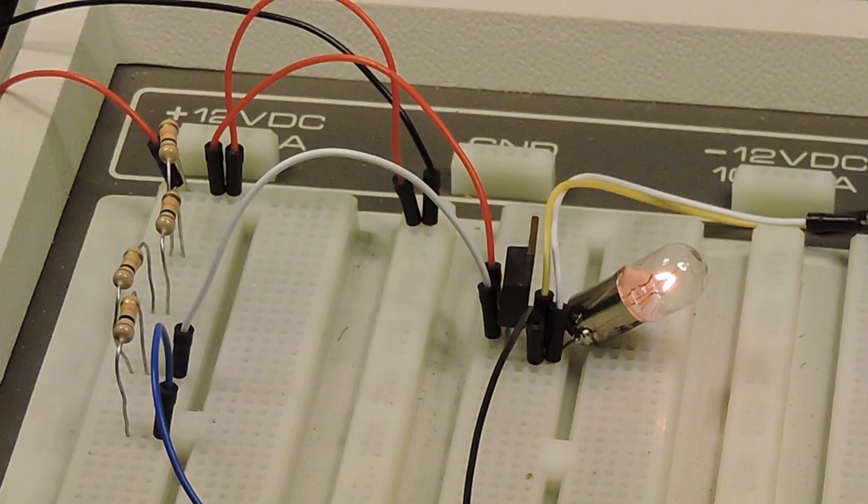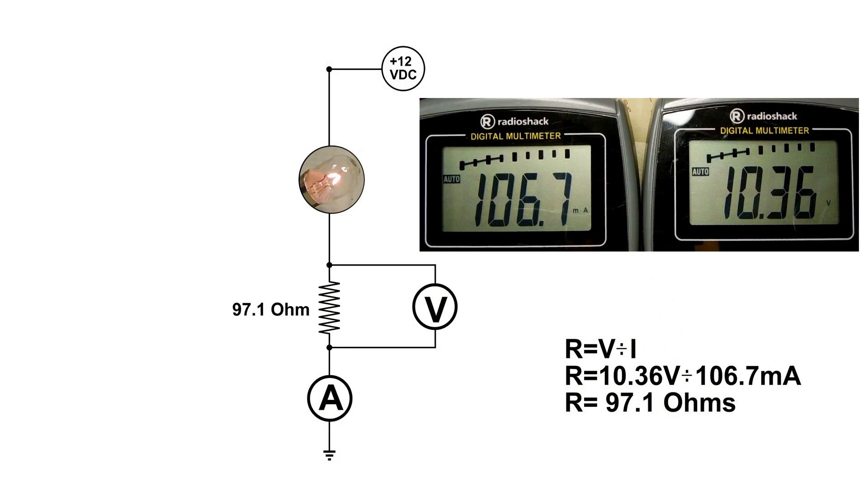This is the first bias point with the transistor and this is the resistor equivalent. All you'd have to do is plug in a 97.1 ohm resistor and you would have exactly the same thing. Of course you wouldn't be able to change it, it would stay that way.